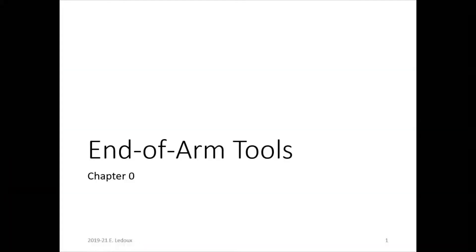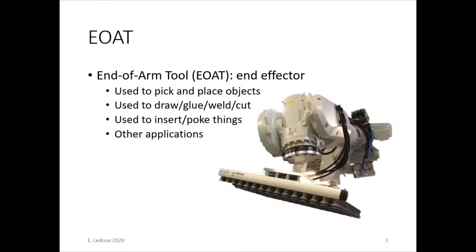In this video, we're going to learn about end-of-arm tools for robots. An end-of-arm tool is also called the EOAT, the end effector, or the claw.